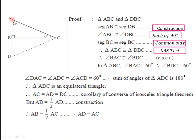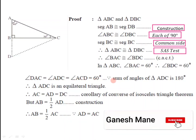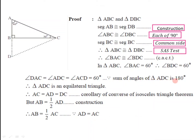Now for triangle ADC, measure of angle A is 60 degree and measure of angle D is also 60 degree. Then the measure of the remaining angle C must be 60 degree. That's why angle DAC is equal to angle ADC is equal to angle ACD is equal to 60 degree, as the sum of all the measures of angles of a triangle is 180 degree. So if for any triangle the measure of each angle is 60 degree, then it is an equilateral triangle. That's why triangle ADC is an equilateral triangle.